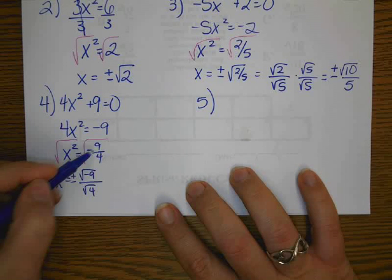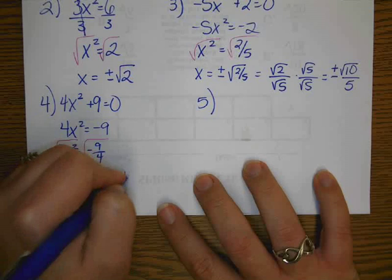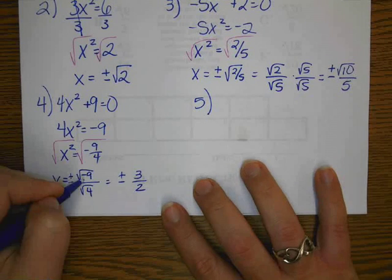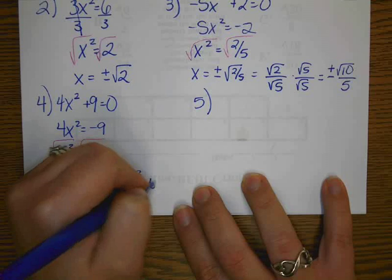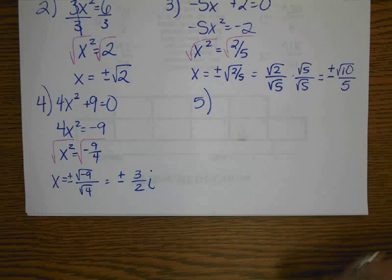Now, however you want to break that up, we know square root of 9 is 3 and square root of 4 is 2, but what about the negative? Well, that's what we have to decide. That square root of a negative is i. So plus or minus 3 halves i is our solution.